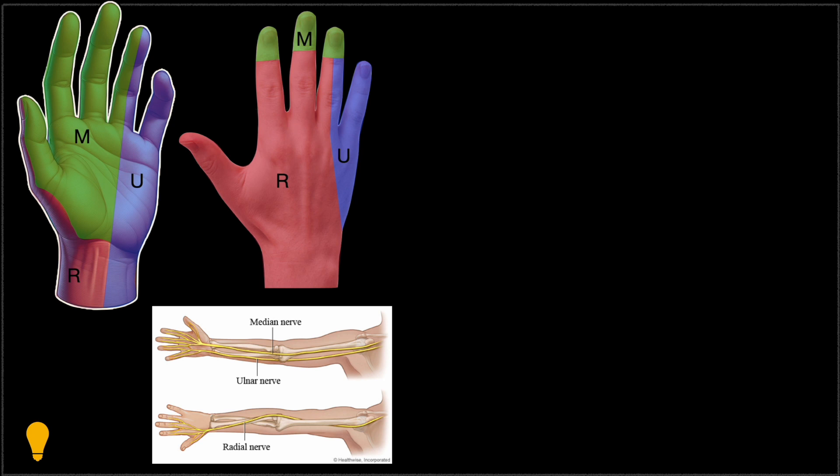The palmar and dorsal aspects of the hand have distinct innervation. The palmar surface is predominantly innervated by the median nerve, while the ulnar nerve contributes to the sensory input for the pinky and part of the ring finger.